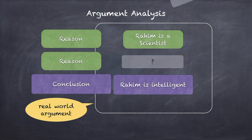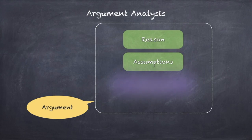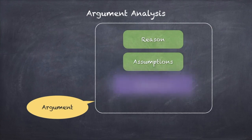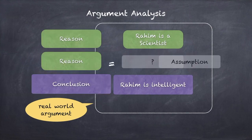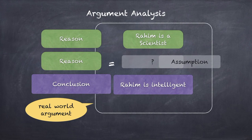Going back to the definition of an argument — specifically how it works in the real world — it would be: reason plus assumption equals conclusion. There could be multiple reasons and multiple assumptions. An assumption is essentially an invisible reason, an unstated reason. It is part of the logic process of getting from one point to another, but it is not explicitly mentioned by the speaker or writer.